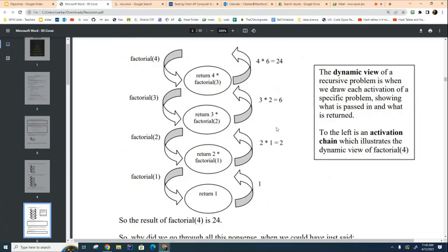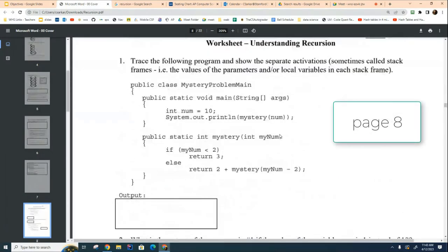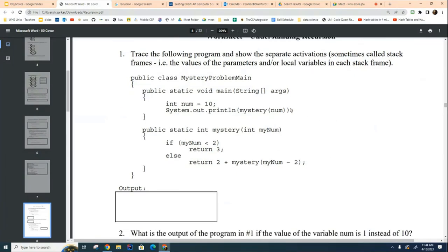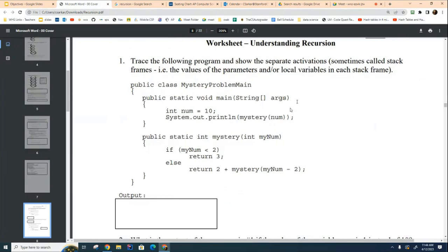So we're going to look at this first set of exercises here. This is our mystery problem main, and what we have to do is figure out what's happening here. You can see that they're going to call it with the number 10 here, and then they're going to launch the call to the recursive method right here. So initially you're going to put a 10 in here and then you're going to trace through the code. And each time you get to a mystery, you have to draw the activation chain by drawing some sort of arrow.